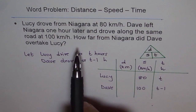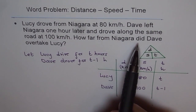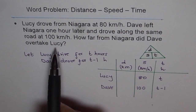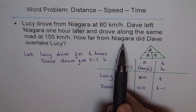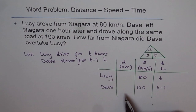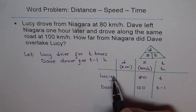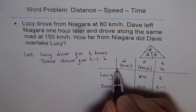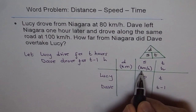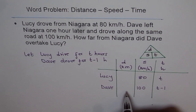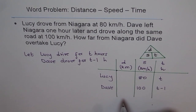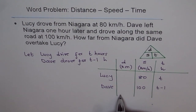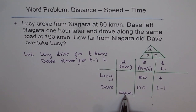The question asks how far from Niagara did Dave overtake Lucy. At the moment Dave overtakes Lucy, they must have covered the same distance from Niagara, because they started from the same place. So if this is the starting point and here Dave overtakes, the distance traveled by both is the same. At that point, these distances are equal — and that will form our equation.